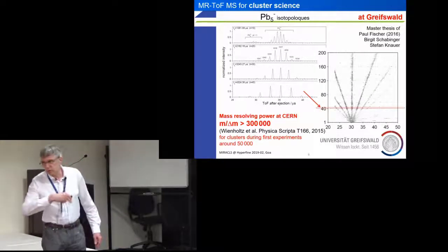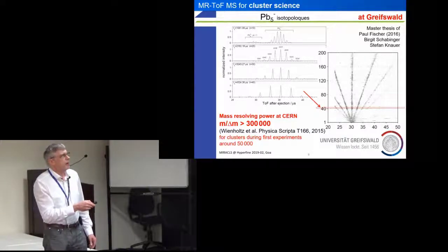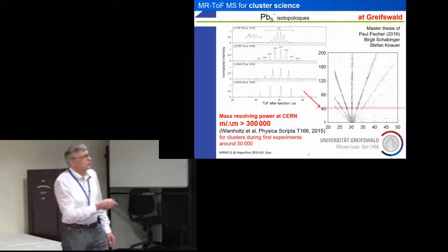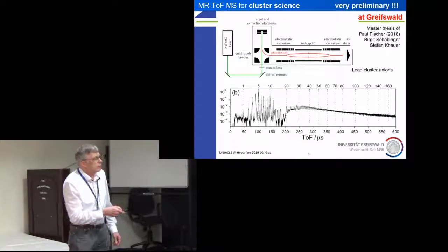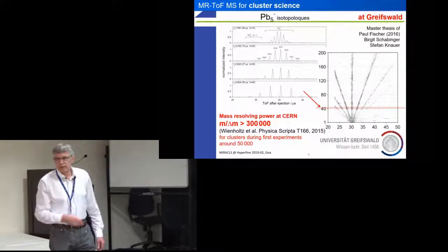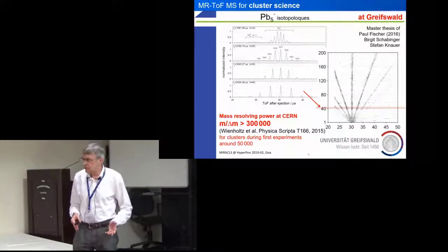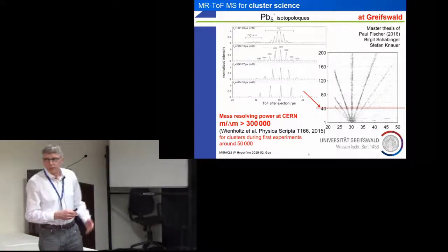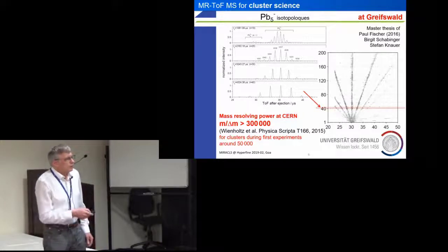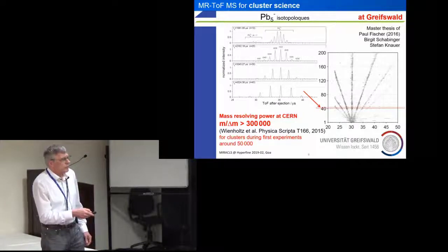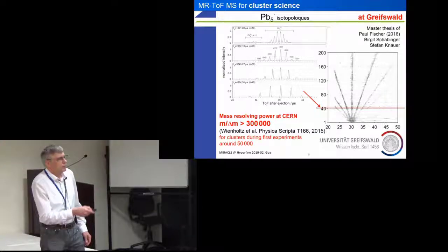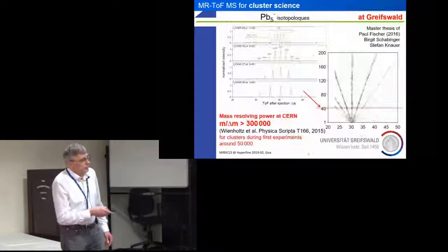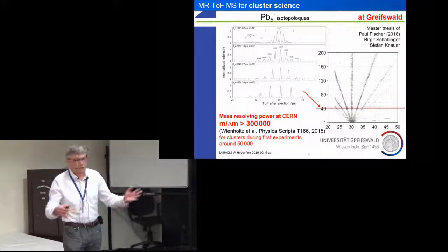If you not shoot through but let them go back and forth 10 times, 20 times, 30 times, 40 times, actually this is just one of the clusters, this is just the number 5. But because lead has several isotopes, you get these isotopologues as they are called, if you have a system of many of them. And if you go further, you can separate these very well.